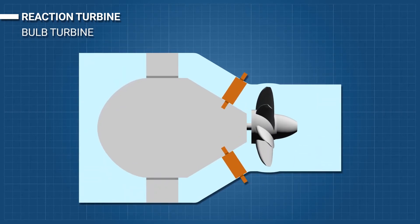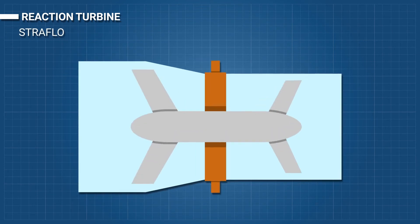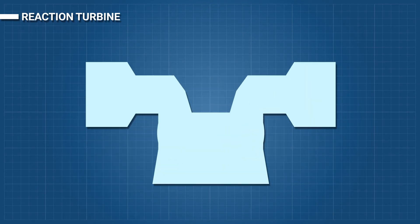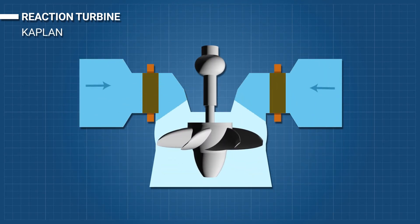Bulb turbine: The turbine and generator are a sealed unit placed directly in the water stream. Straffalo: The generator is attached directly to the perimeter of the turbine. Kaplan: Both the blades and the guide vane are adjustable, allowing for a wider range of operation.